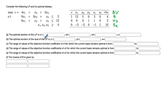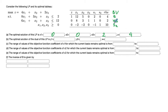Part a asks for the optimal solution of this LP. This is straightforward — we just read the values of the original variables x1, x2, and x3 from the optimal tableau. Only x3 is basic among these variables, with a value of two. The non-basic variables are zero, and the optimal objective value is four, which we can verify by plugging x3 = 2 into the objective.